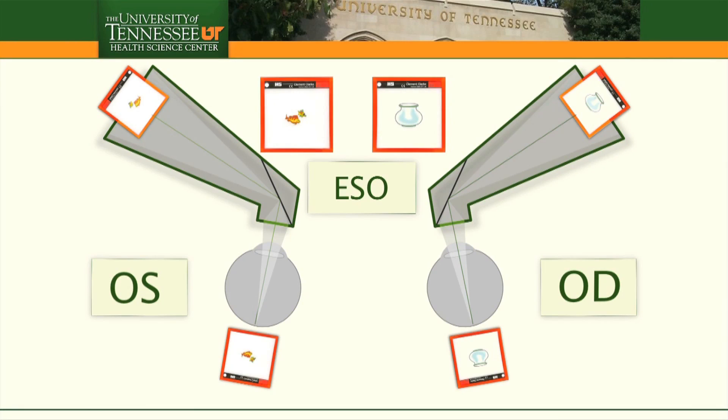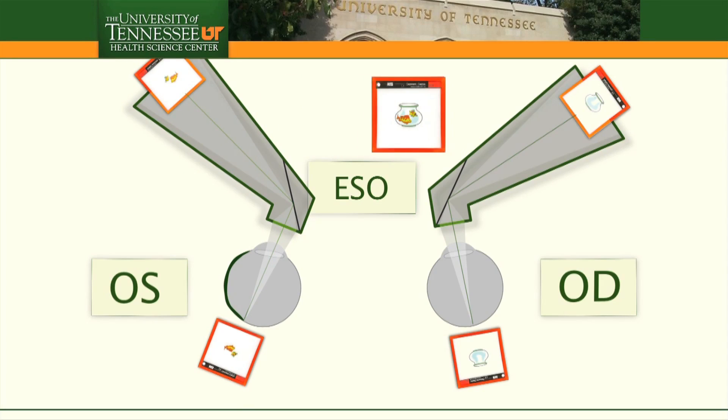On the troposcope, the subjective deviation can be measured if the person moves the haploscopic tube image so that the fish are in the bowl.